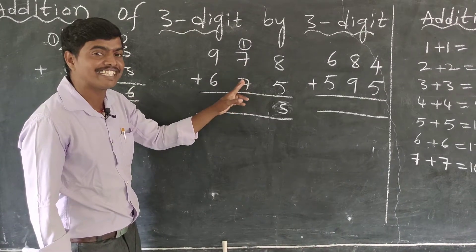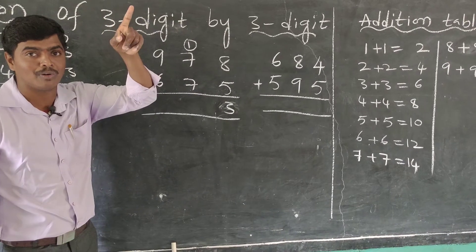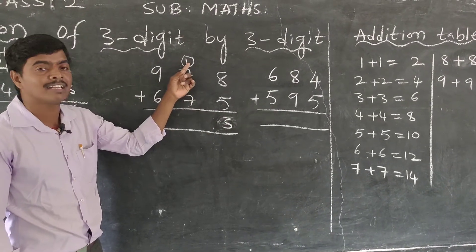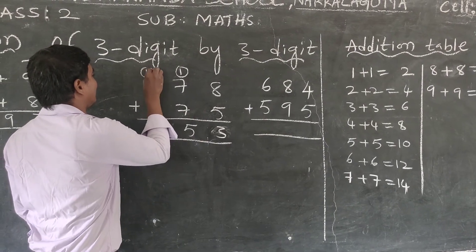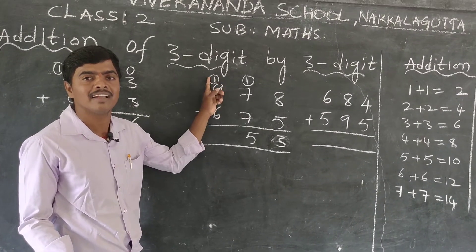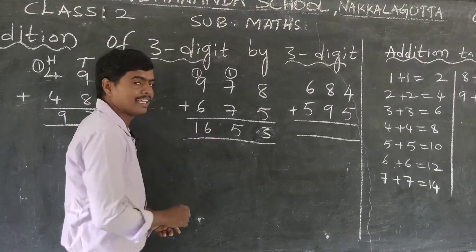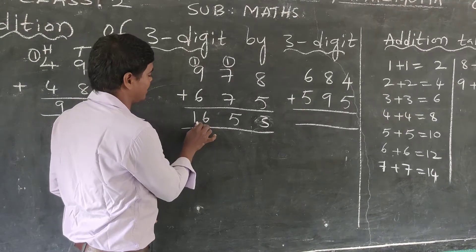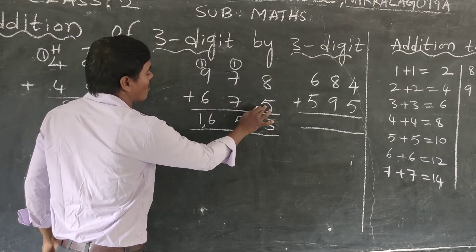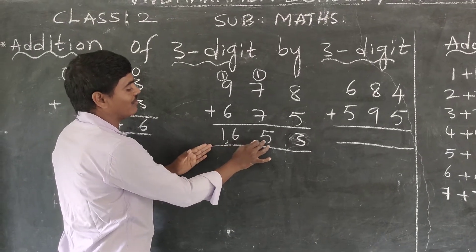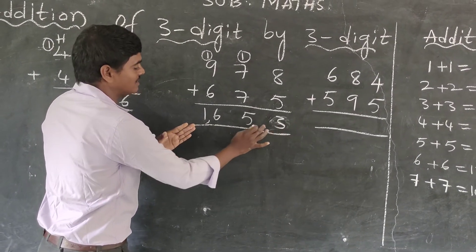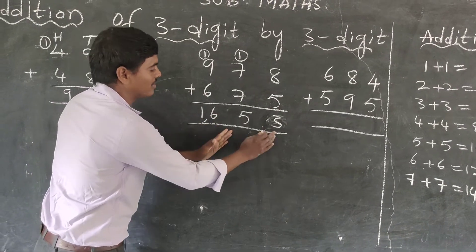Now the tens place — which table are we using? The addition table. 7+7=14. Plus the carry of 1 makes 15. Write 5, carry 1. Then the hundreds place: 9+1=10, plus 6 equals 16. Write 6, carry 1. So 978 plus 675 is equal to 1,653.